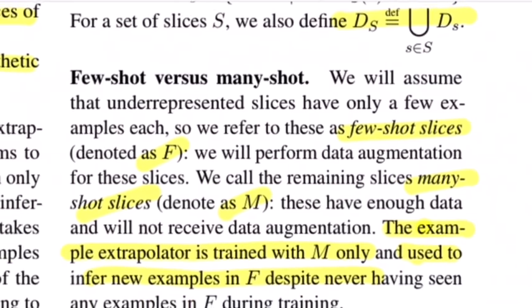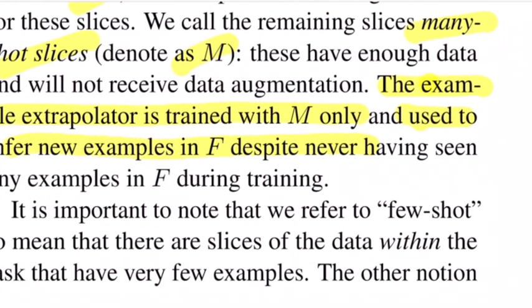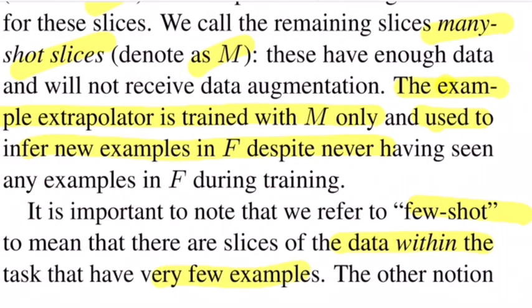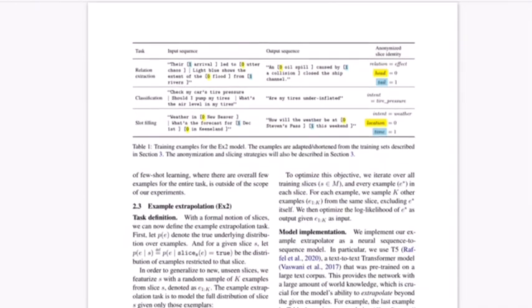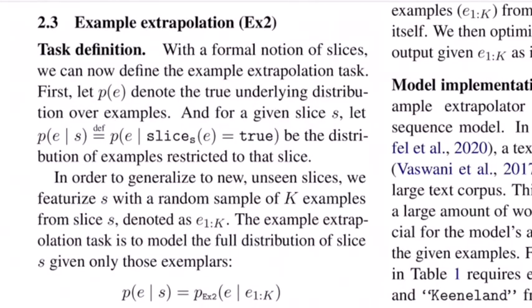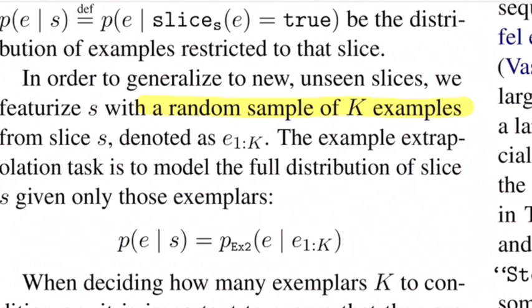We have seen F and M. It's important to note that few-shot here means the slices have very few examples, which is a little unusual because few-shot is usually used when you have less data for the entire problem. Whereas in this case, for those slices you have very few examples but rest you have enough examples for other slices represented by M. Now let's talk about the formal definition of EX2. They randomly sample k examples from every slice s and denote it as e_1 to k. We want to train a model that takes these k examples as input and tries to predict something from the same distribution.